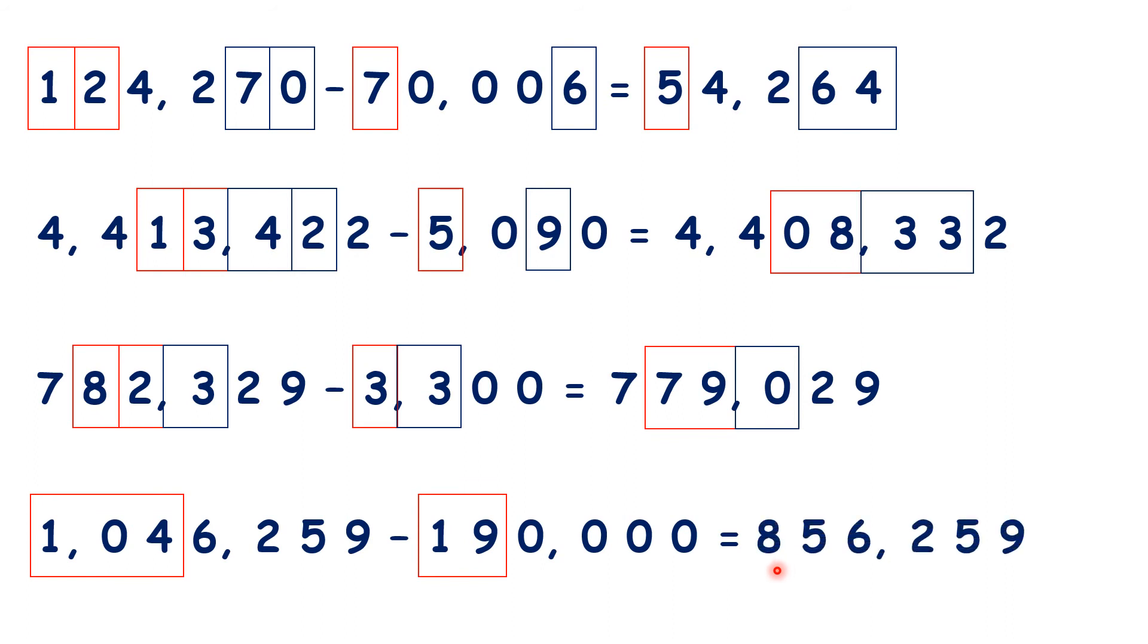So our answer is 856,259. So now we don't have a millions digit, and we have 8 in the hundred thousands and 5 in the ten thousands.